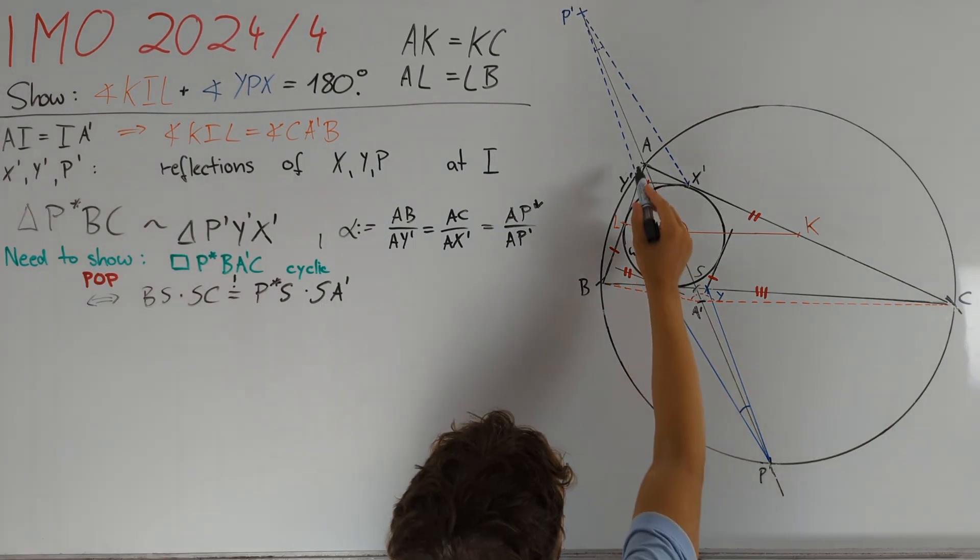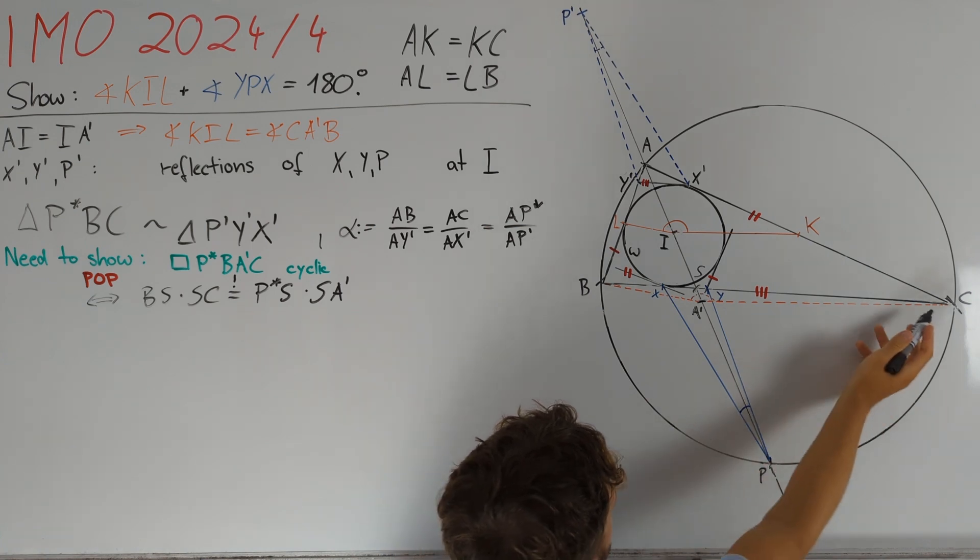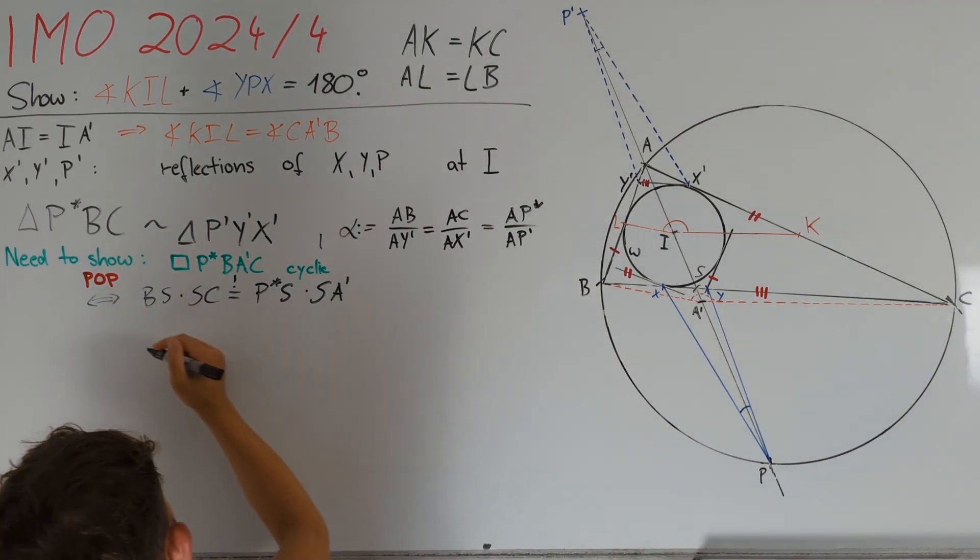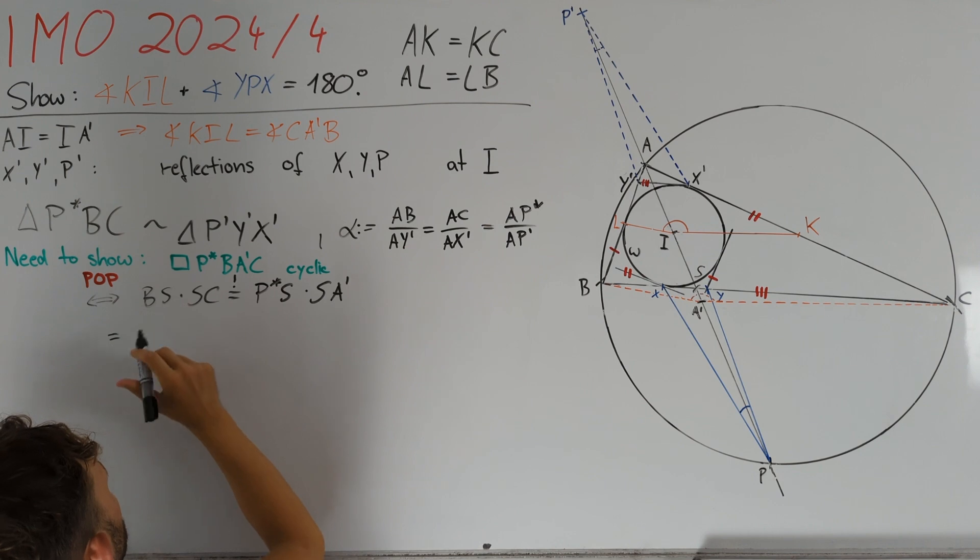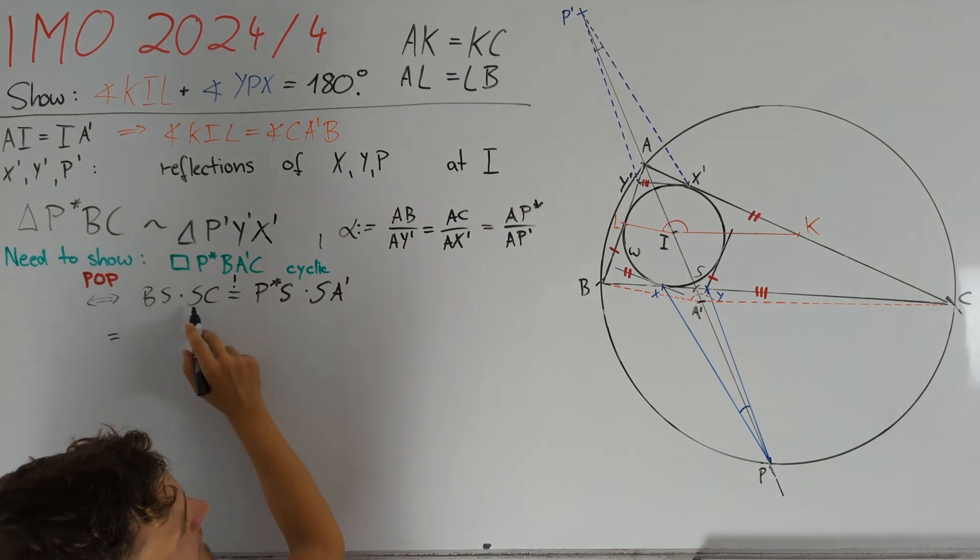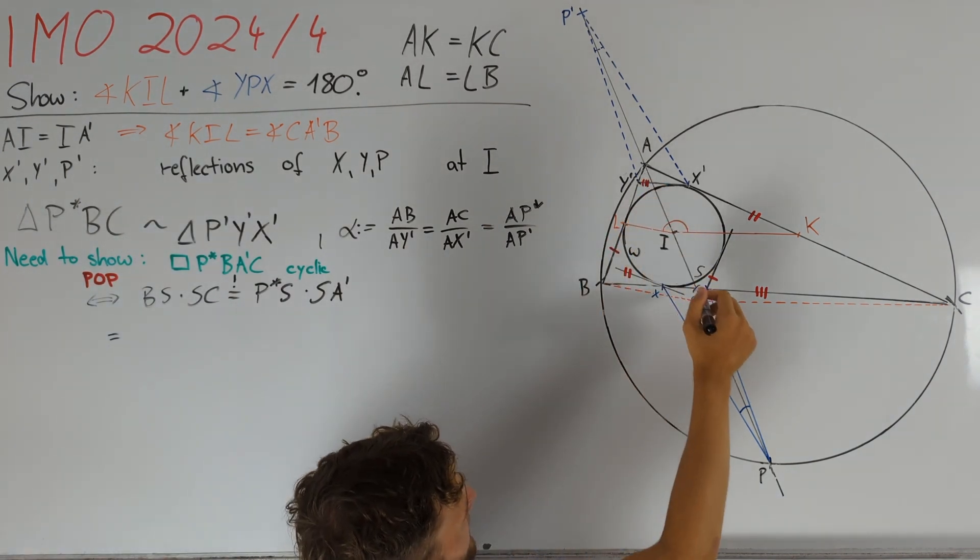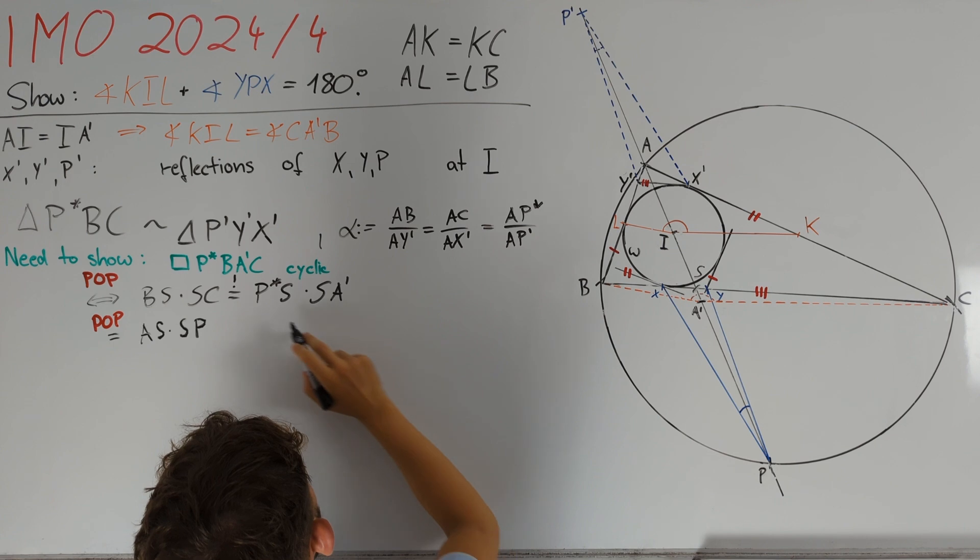We already know that points A, B, P, and C lie on a circle, and therefore, by a second application of power of a point, we get that BS times SC is equal to AS times SP.